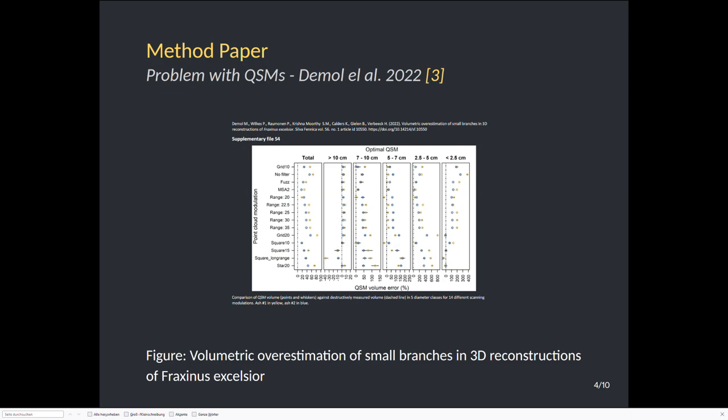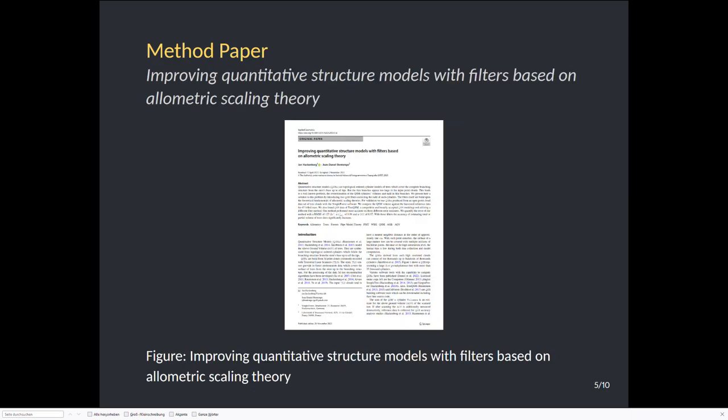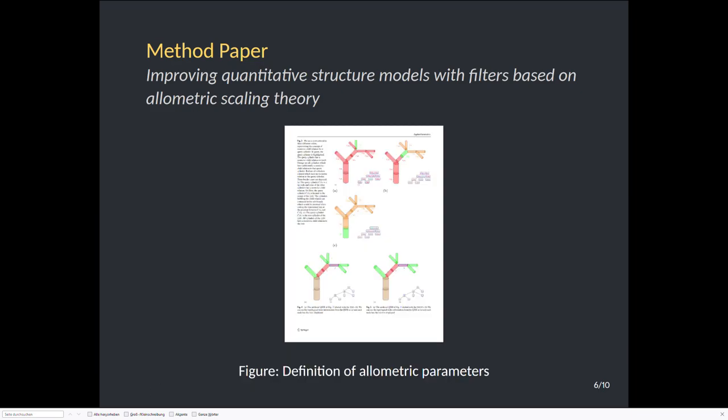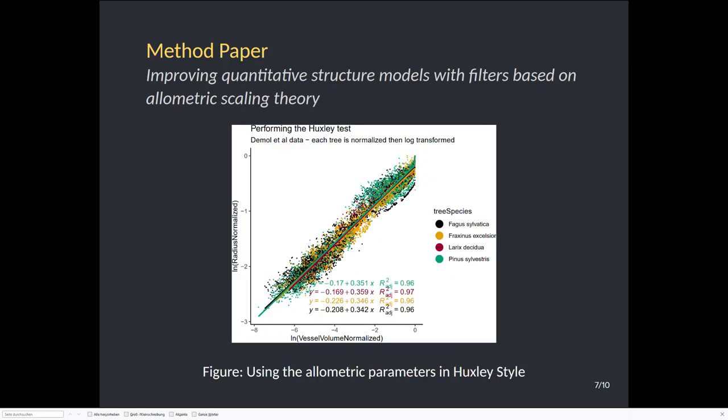We as QSM developers usually build filters to counteract this. Indeed, I just published a method paper. It is called 'Improving Quantitative Structure Models with Filters Based on Allometric Scaling Theory.' You see here a screenshot of the first page. In this paper I define some allometric parameters. Here is a screenshot of one of the figures where I explain new parameters, how we can look at trees. Those parameters describe some interesting stuff.